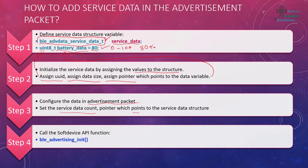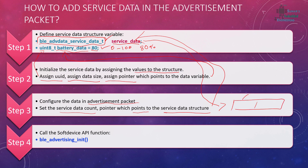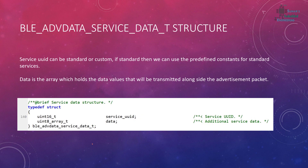We need a pointer that points to the service data structure. It will retrieve the data from this structure and transmit it in the advertisement. After configuration we have to initialize the advertisement, and then start the advertisement — at which point the advertisement packets will contain this service data.